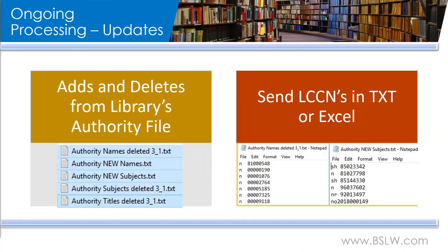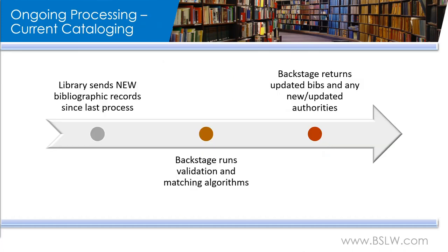If you processed the base file and are interested in continuing to use the bibliographic record validation service, we do offer current cataloging. With this service, we process any newly cataloged records with the same validation and matching algorithms that we used in the base file, and we return all your updated bibs as well as any new and updated authority records. This ensures that your bibliographic records are all consistent within your catalog — and we all know that nobody likes inconsistency.